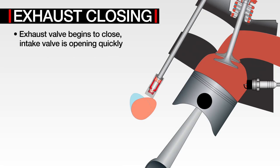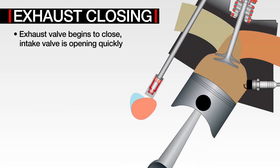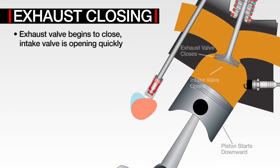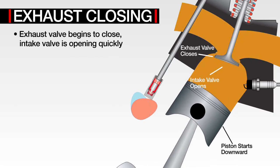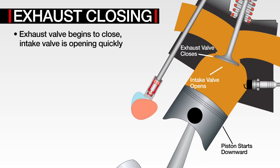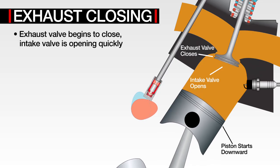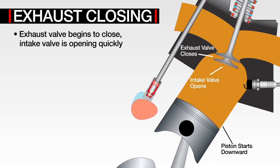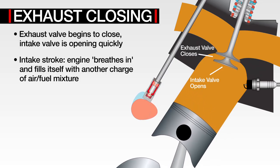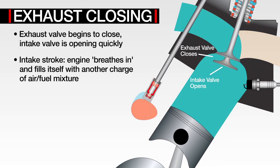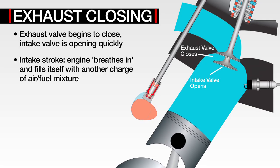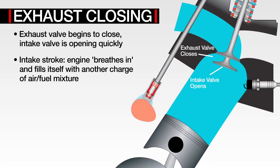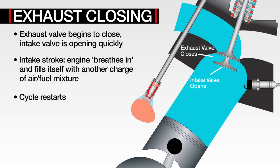The exhaust valve begins to close just after the piston starts downward. Meanwhile, the intake valve is opening quickly. This is called the intake stroke, where the engine breathes in and fills itself with another charge of air-fuel mixture. This action begins the cycle again.